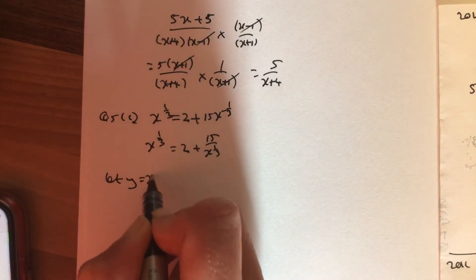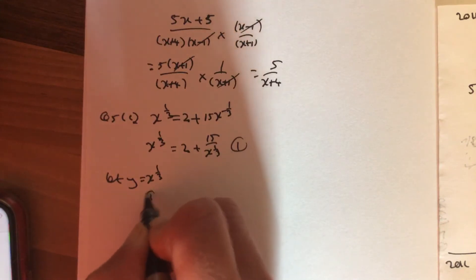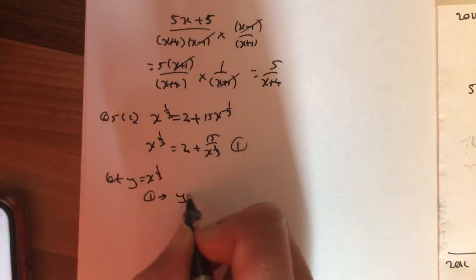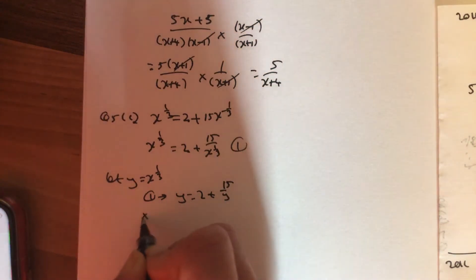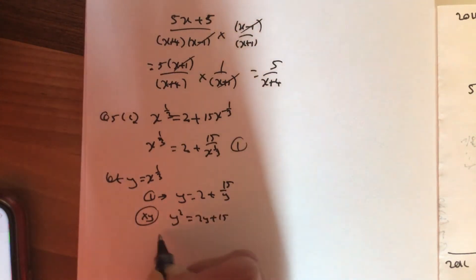I'm going to say let y equals x to the one-third. So my equation 1 now becomes y equals 2 plus 15 over y. Multiplying everything by y, you will see a quadratic forming.